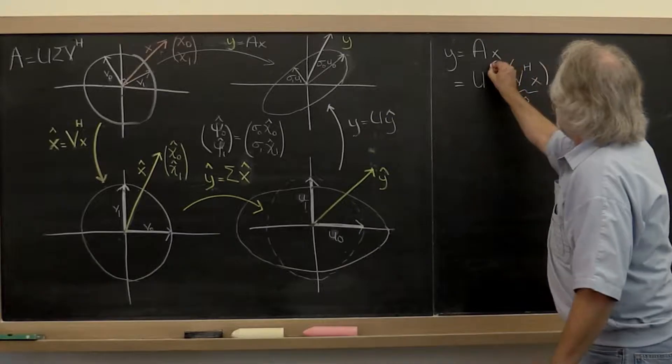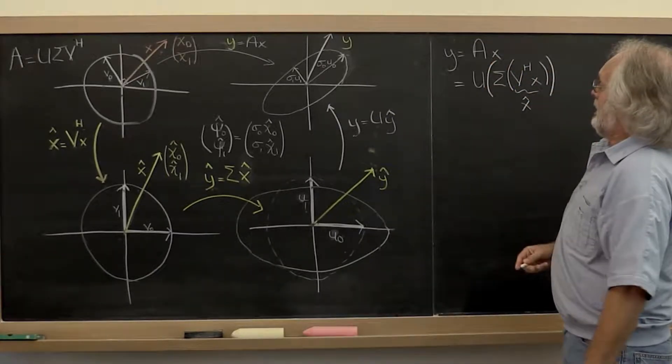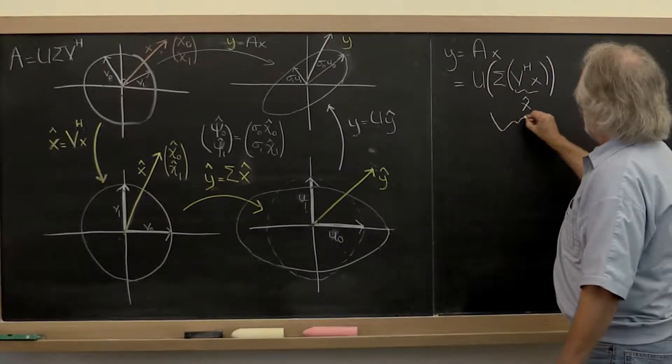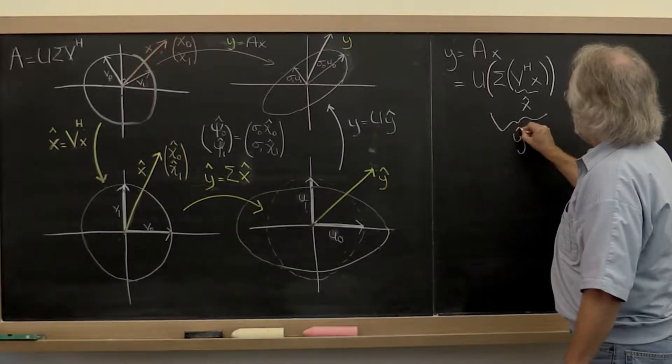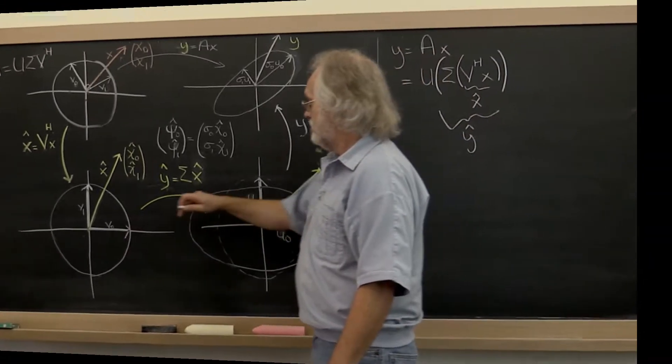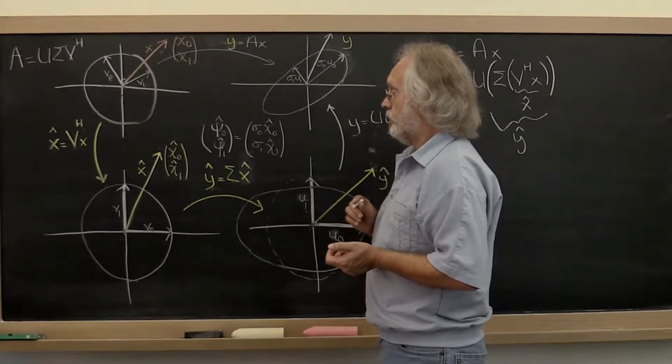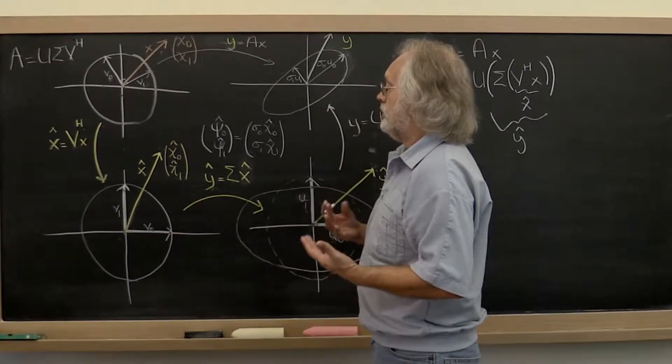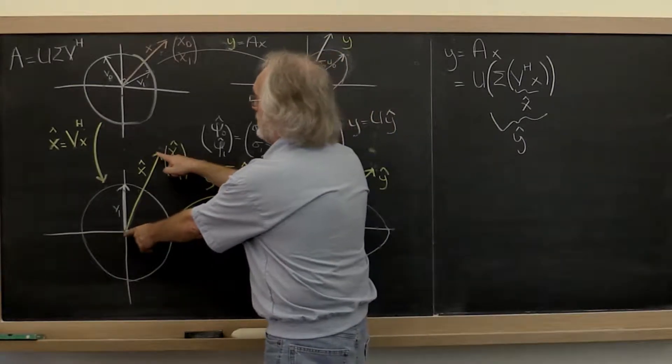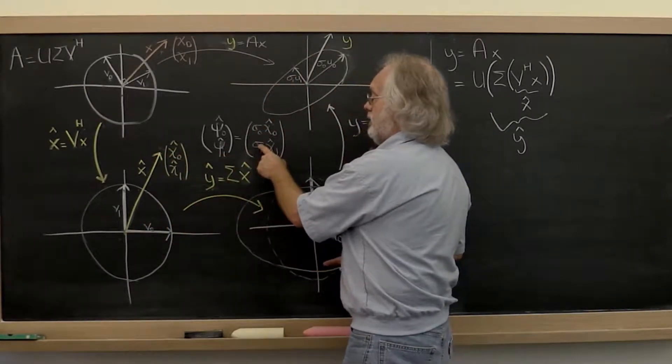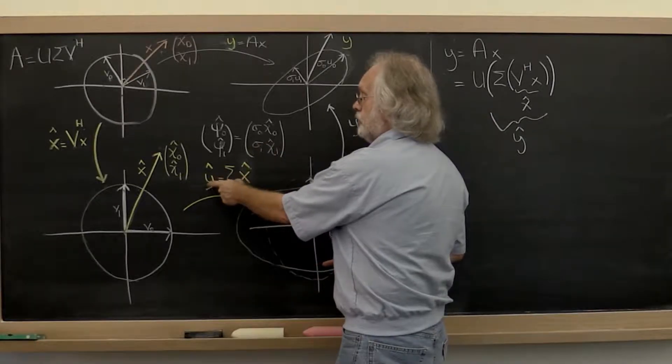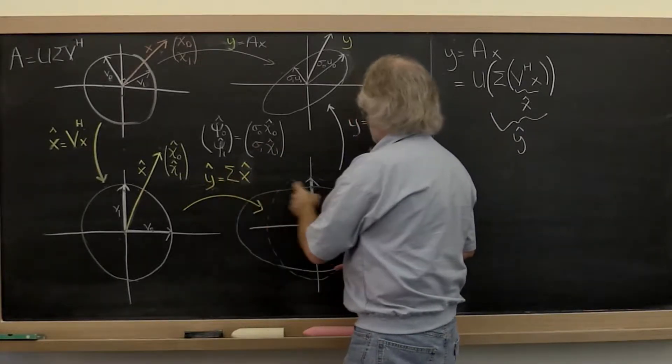Then we want to take that and create this, and that we're going to call y hat. What happens there? This picture here can be interpreted in two different ways. One way in which you can interpret it is you take your x hat and transform it by scaling the individual coefficients to create your new vector y hat.